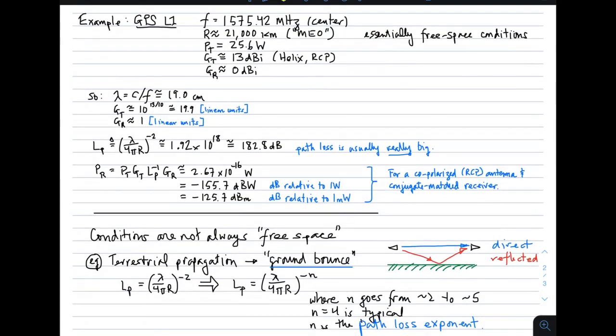All right, let's do an example. The example we'll do here is the L1 frequency of GPS, of the Global Positioning System. The L1 frequency is the frequency that accounts for the service that most people know, which is position location. GPS satellites transmit at 1575.42 megahertz, at least that's the center frequency. GPS satellites are in medium Earth orbit, or MEO. So they move through the sky, so the distance between the satellite and the receiver varies. But for this example, we'll take a typical value, which is 21,000 kilometers. Now there's not much between a GPS satellite and the receiver, so these are essentially free space conditions.